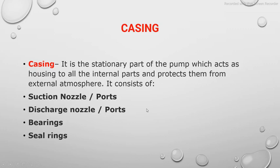The second part is the casing. It is a stationary part — a covering under which all the internal parts remain. It acts as a protector for the internal parts from the external atmosphere. It contains the suction port, discharge port, the bearings, and the seal rings.